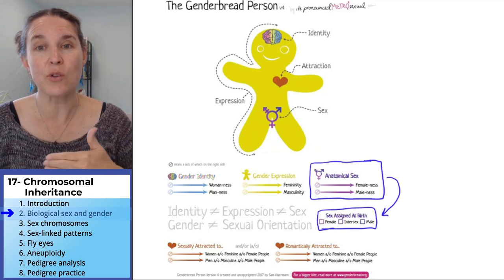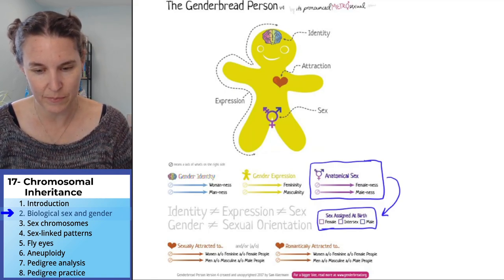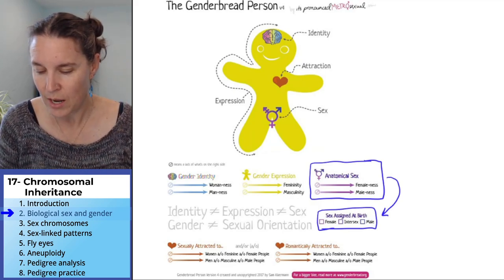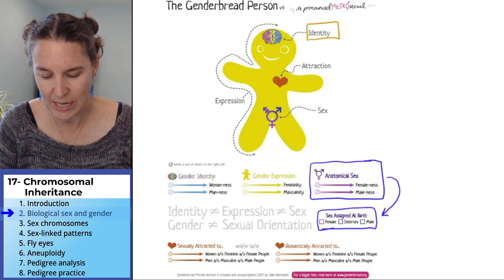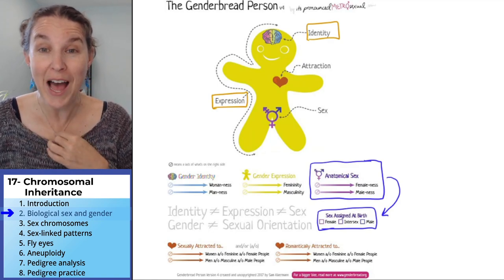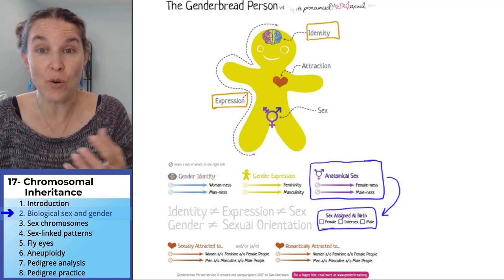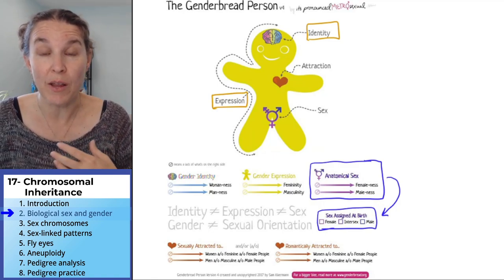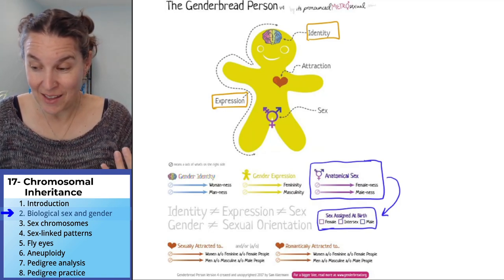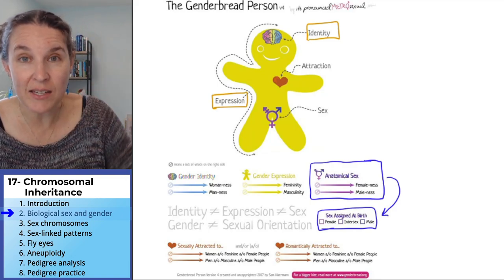Gender is how you feel about your gender. And it also is on a spectrum. There are two aspects of gender: gender identity and gender expression. Gender identity is how you feel inside your own body — are you male or female, a man or a woman, a boy or a girl? That's outside our realm — that's not biology. That is inside your own body.